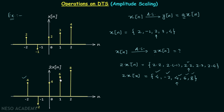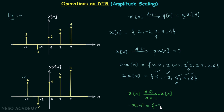Now we will talk about amplitude reversal, which is a special case of amplitude scaling where A = -1. This gives us a new signal -Xn. To find it, we simply put a negative sign in front of all values: -Xn = {-2, 1, -2, -3, -4}.